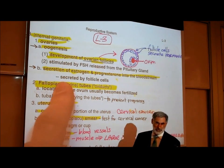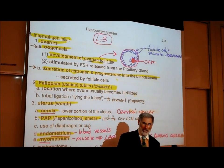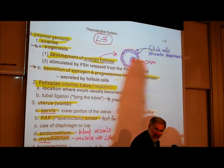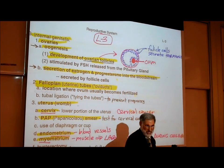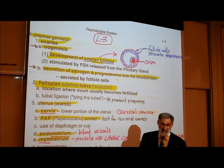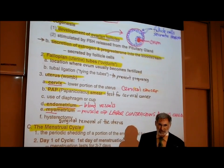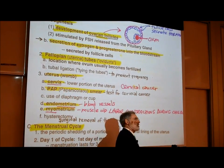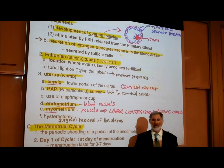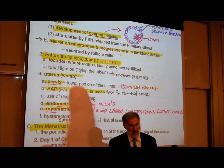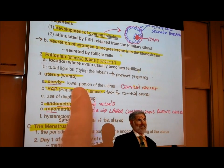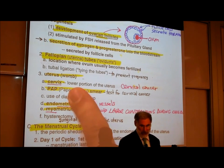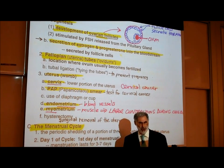The second function of the ovaries is the secretion of estrogen and progesterone into the bloodstream — it is the follicle cells that do that secreting. The fallopian tubes are also known as the oviducts. That is the location where an egg is normally fertilized by the sperm. Fertilization or conception does not occur in the uterus — it occurs in the fallopian tubes if it's going to occur at all.